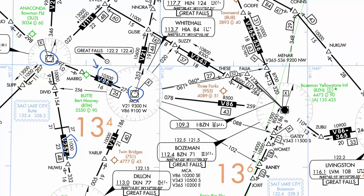It's important to note that the MEA will not guarantee you communications coverage along the entire route — only navigational coverage — so there may be areas where you're not able to talk to air traffic control. The MEA of 10,500 feet applies to the entire portion of Victor 86 between Whitehall and Copperstown. If you see a symbol with two T's, that indicates that the MEA changes between two segments of the route.